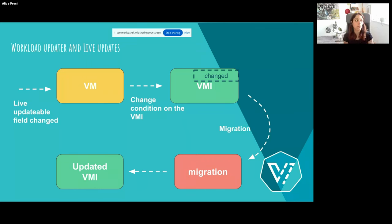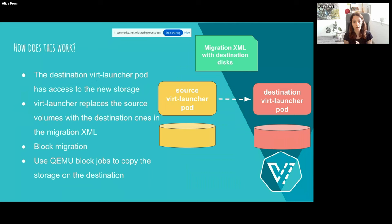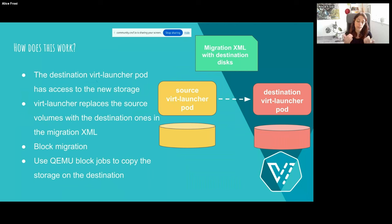Under the hood, volume migration is using VM live migration. As I mentioned, the restriction in Kubernetes is that either we need to restart the pod or we need a second pod — and this is actually how live migration works in KubeVirt. During live migration, the destination virt-launcher pod will directly have access to the new storage. In the source virt-launcher, we replace the source volume with the destination one in the migration XML. Then we use block migration and rely on QEMU block jobs to fully copy the storage to the destination.